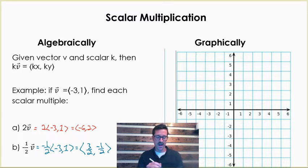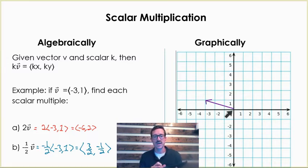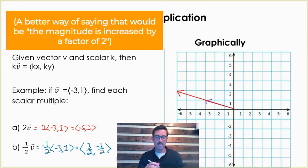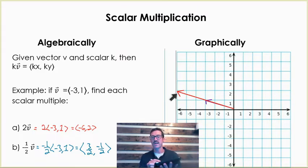Let's look at what this looks like graphically. I'm going to graph our original vector in purple — it's negative 3, 1. The component form of the vector doesn't tell us where the initial point is; it just says that from wherever we start, it moves to the left 3 and up 1. So I can place this vector in standard position. The scalar of 2 is just going to stretch out that vector and make it twice as long. If you multiply that purple vector by 2, you get the red vector, which has a horizontal component of negative 6 and a vertical component of 2.